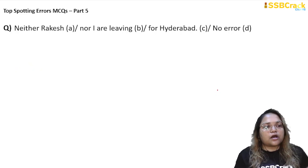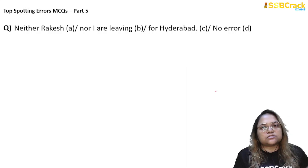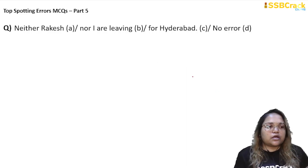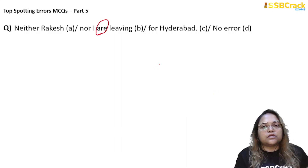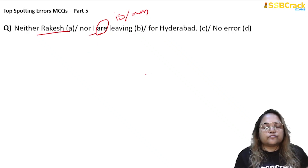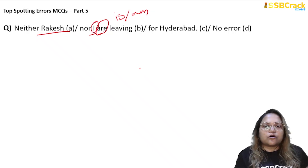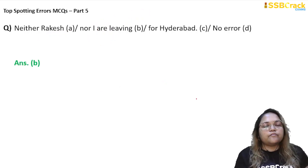Next question: 'Neither Rakesh nor I are leaving for Hyderabad.' Two things will change here. Both subjects — Rakesh and I — are singular. The rule for 'neither...nor' connecting singular subjects is that the verb must also be singular, but here the plural verb 'are' is used. Now, which singular verb is correct — 'is' or 'am'? The verb follows the nearest subject. The closest subject here is 'I,' so according to 'I,' we use 'am.' It should be: 'Neither Rakesh nor I am leaving for Hyderabad.' So 'are' is wrong, and the right answer here is option B.